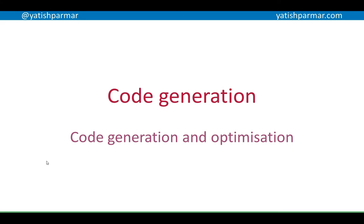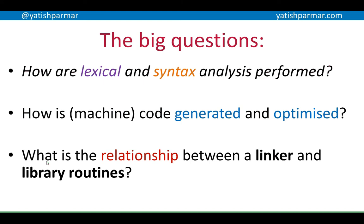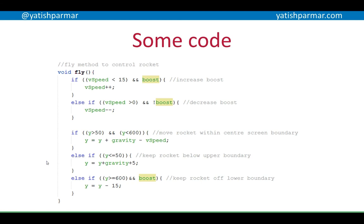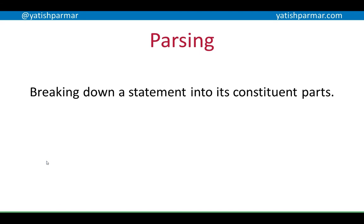This is the second video about code generation and optimization. The previous video looked at how lexical and syntax analysis are performed. We went from abstract, high-level source code to something the machine needs to understand. We talked about identifying lexemes, breaking a line of code into its constituent parts, tokenizing it, and replacing instructions with numbers the CPU can understand.